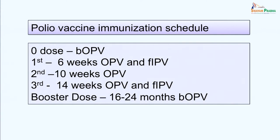The polio vaccine immunization schedule is: the 0 dose at birth is bivalent oral polio vaccine. The first dose at 6 weeks of age includes one bivalent OPV and a fractional dose of IPV. The second dose is given at 10 weeks of age with oral polio vaccine. The third dose at 14 weeks includes both OPV and a fractional intradermal dose of IPV. A booster dose is given at 16 to 24 months of age with bivalent oral polio vaccine.